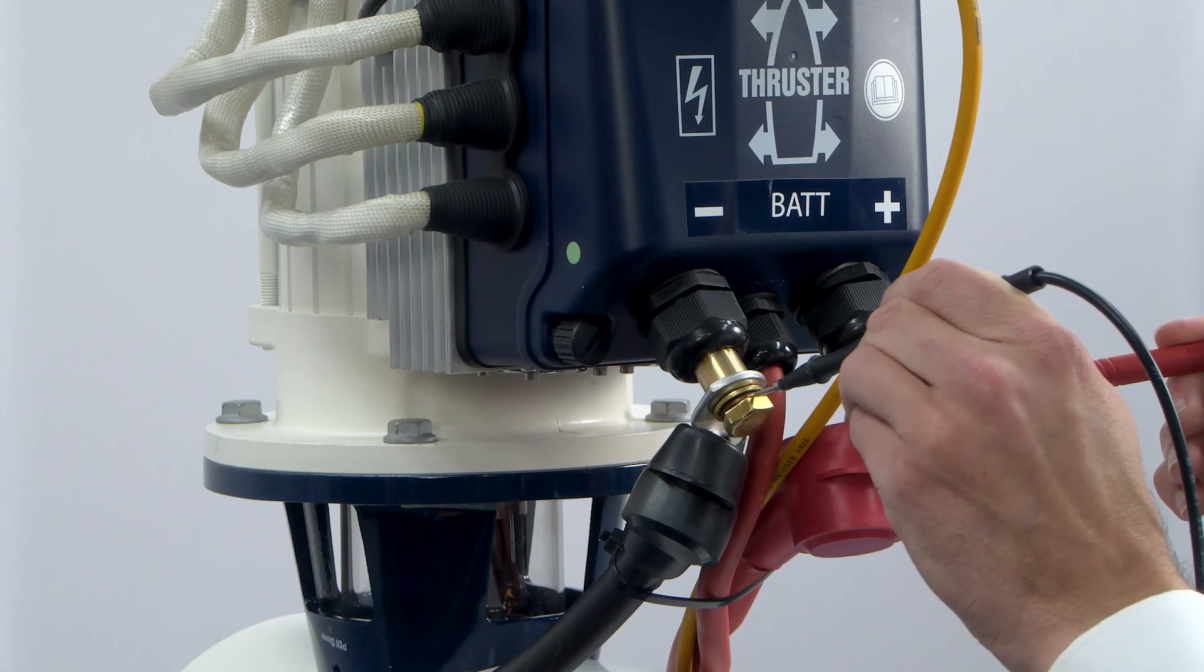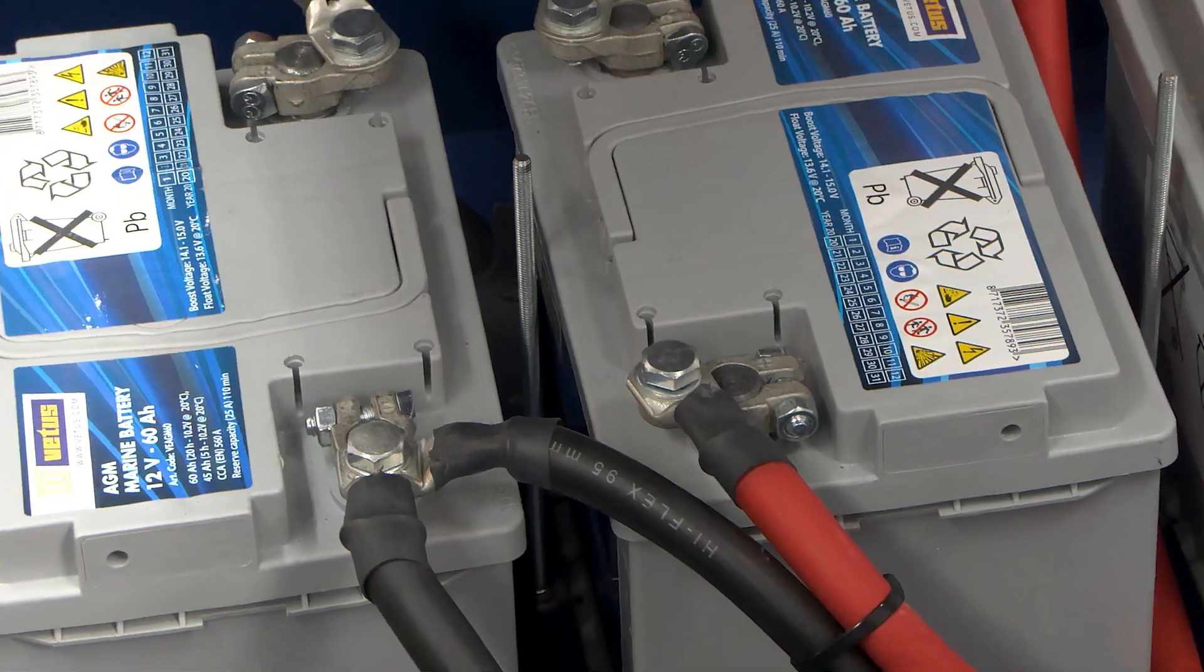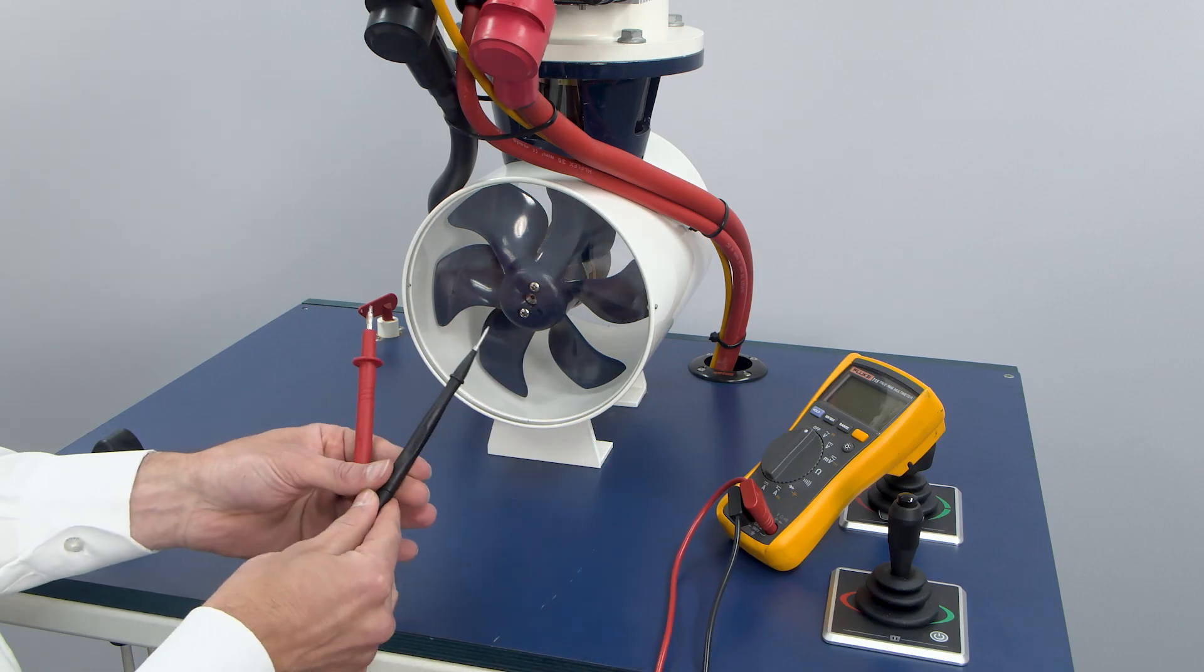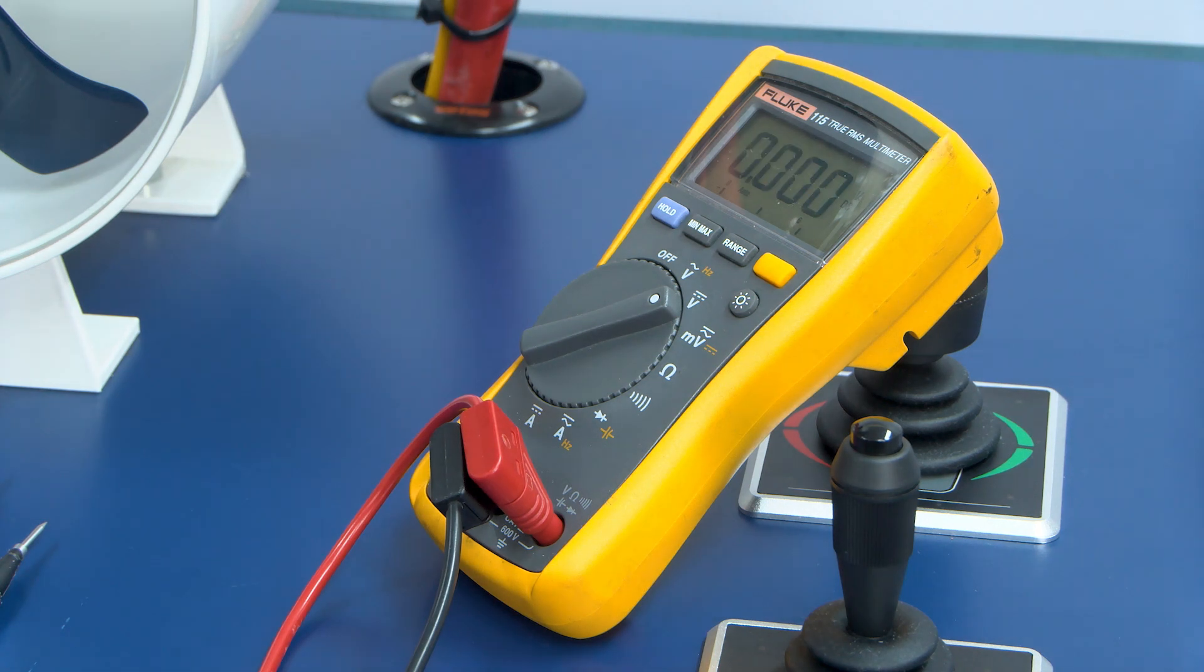To determine the origin of the problem you must measure the voltage on the batteries and on the thruster. First, make sure you have a dependable multimeter. When taking these measurements, set it to the DC voltage setting.